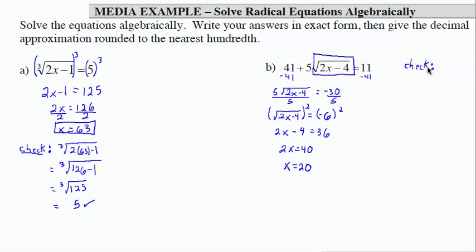Because squaring both sides is actually not considered to be an equivalent operation. And we might have introduced an extraneous solution. So let's plug in 20 on the left-hand side and see if we get 11 as a result.